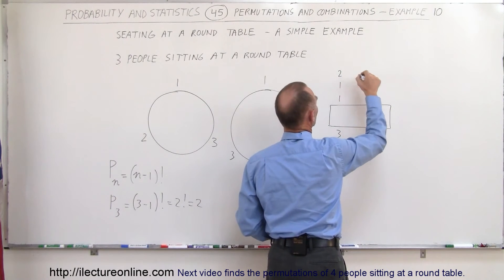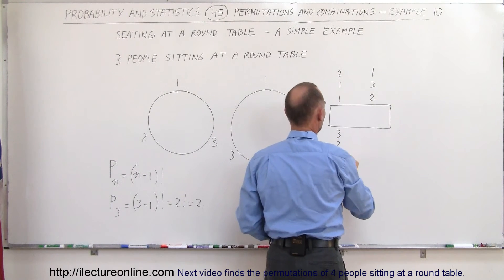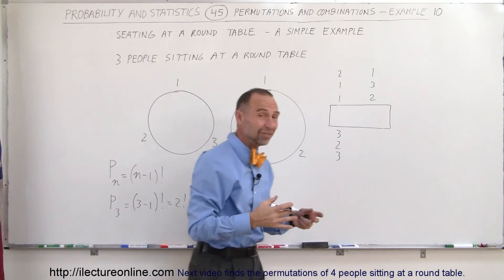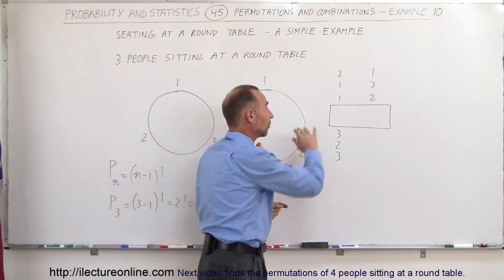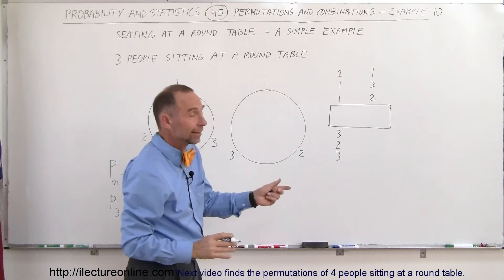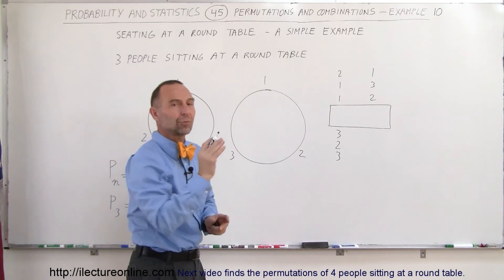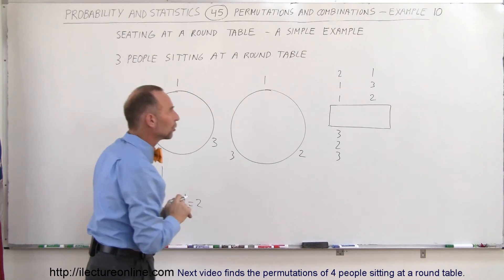and then the second person could sit there, the first person could sit there, and so forth. So, you can see that, in this case, there would be a total of 6 different ways in which you can rearrange 3 people around the rectangular table. In that case, the number of permutations would be 3 factorial. So, you see the difference between them.